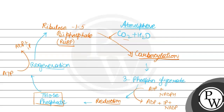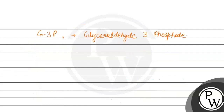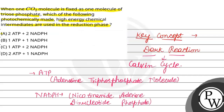एक CO2 molecule fix करने के लिए triose phosphate बनाने में 2 ATP और 2 NADPH के molecules की ज़रूरत पड़ती है। Total: 2 ATP and 2 NADPH। So the final answer is A — 2 ATP plus 2 NADPH. Hope you understood it well. Best of luck.